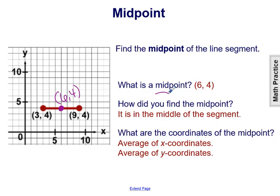The coordinates of the midpoint — how would we find it? We would take the average of the x-coordinates we're given, and we would take the average of the y-coordinates we're given. To find (6, 4), we did 3 plus 9 divided by 2 — so 12 divided by 2 is 6. And then 4 plus 4 divided by 2 — so 8 divided by 2 is equal to 4.